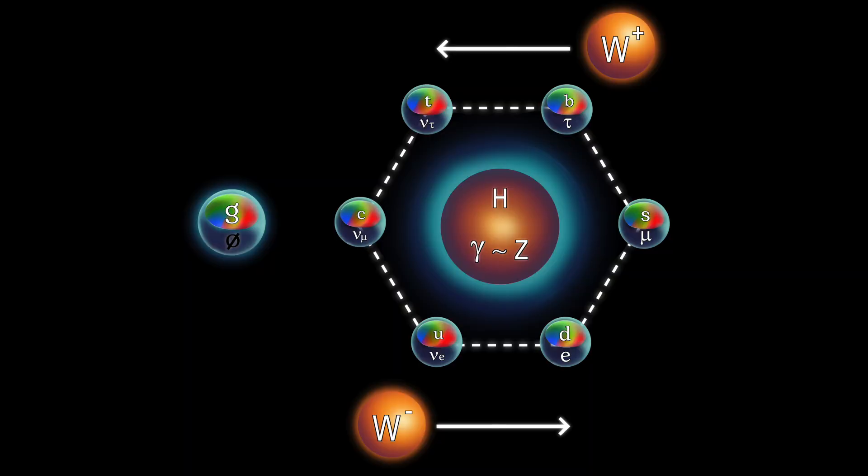The heavier version of the up quark is the charm quark, and the heaviest version is the top quark. The heavier version of the down quark is the strange quark, and the heaviest version is the bottom quark. The heavier version of the electron is the muon, and finally, the heaviest version of the electron is the tau.